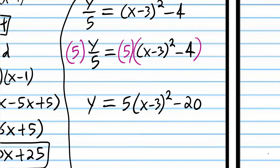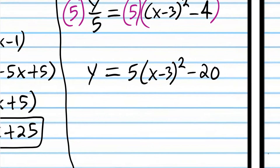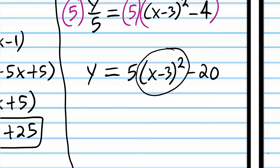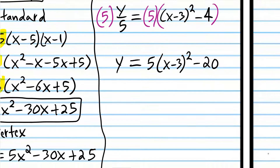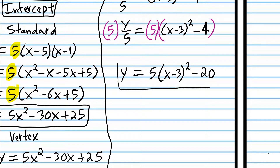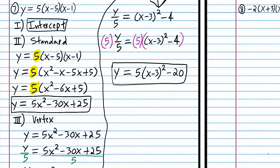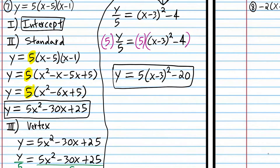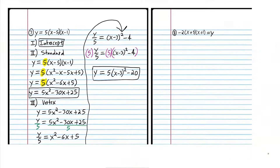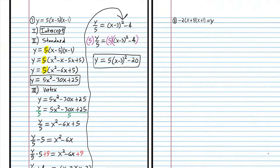So you can see that when you're changing to vertex form, the process is a little more involved. Let's try a couple more before you do one on your own. We're starting with intercept form again. Let's first identify the form — intercept form, that's part of the answer. Then step 2, we're going to convert to standard form.